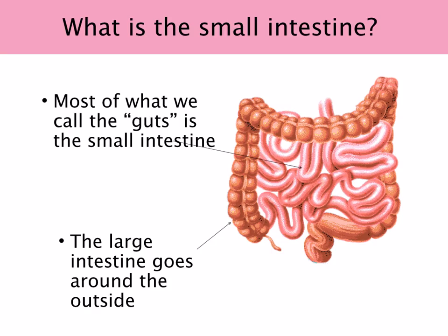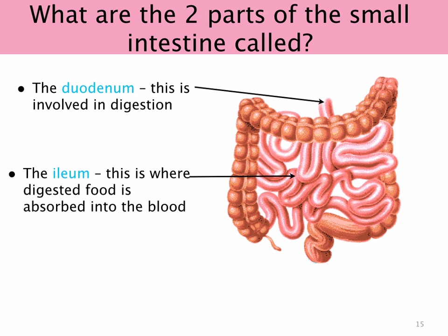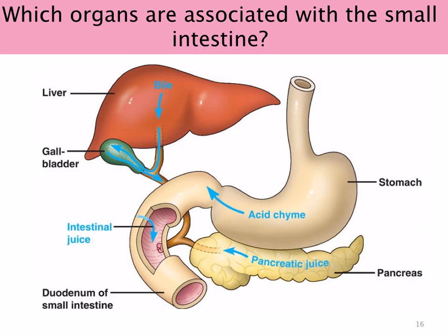What exactly is the small intestine? If you zoom into the small intestines, you can see they look like a little pink snake-like structure, and surrounding it you've got the large intestine. Most of what we call the guts is the small intestines. Looking at this diagram, which arrow is pointing to the duodenum and which is pointing to the ileum? The duodenum is the first part, involved in digestion; the ileum is the second part, where food molecules are absorbed into the blood.